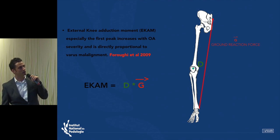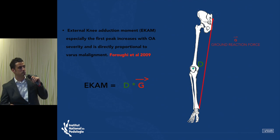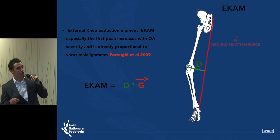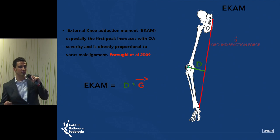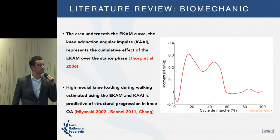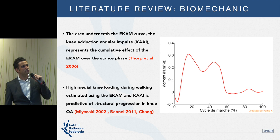A brief biomechanical explanation: the EKAM is the product of the ground reaction force and the distance between the joint center of the knee and the action line of the ground reaction force. When this distance increases, the EKAM increases. That is why this criterion considers knee motion and not just the static position — making it a very relevant measure.